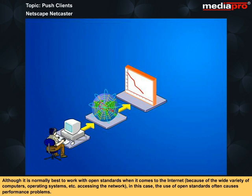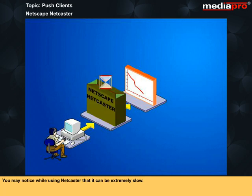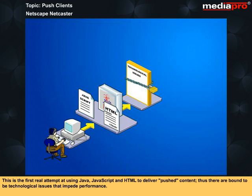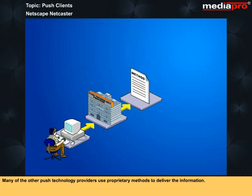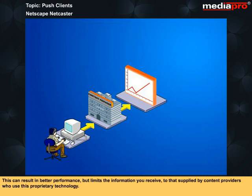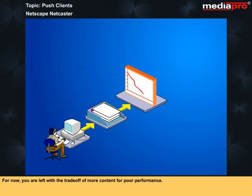Although it is normally best to work with open standards on the internet — because of the wide variety of computers, operating systems, etc. accessing the network — in this case, the use of open standards often causes performance problems. You may notice while using Netcaster that it can be extremely slow. This is the first real attempt at using Java, JavaScript, and HTML to deliver pushed content, so there are bound to be technological issues that impede performance. Many other push technology providers use proprietary methods, which can result in better performance but limits the information you receive to that supplied by content providers using that proprietary technology. For now, you are left with a trade-off of more content for poor performance.